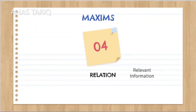Maxim of relation. This maxim is about providing relevant information regarding the topic. It means that one should be relevant to the topic in communication. For example, someone asks: how are you? If a person replies I am good or I am fine, then they are following the maxim of relation. But if they reply I like coffee or I like tea, then they are violating the maxim of relation because they are not relevant to the topic.